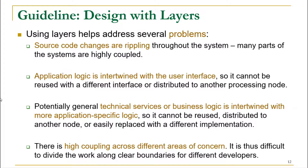This layered architecture is going to address some problems which we might have if we do not use the concept of layers for arranging and organizing things. We may know that source code changes are rippling — meaning a change at one place in the code has effects at other places too. If we use the concept of layers, we are going to reduce this rippling effect and changes will be much easier.